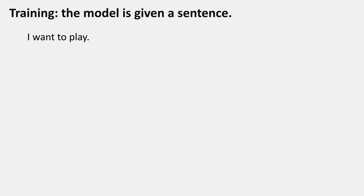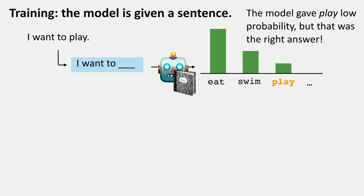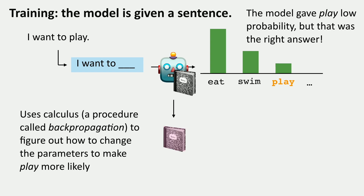We feed the system a lot of sentences from the internet. If we have the sentence 'I want to play,' we ask the model to look at just the prefix 'I want to blank' and predict what should come next. The model crunches that and predicts a distribution over possibilities — eat, swim, play, all the other words. Here, maybe we didn't give 'play' very high probability, but that was actually the word that was going to come next. So we want to tell the model to change its parameters so that 'play' becomes more likely.